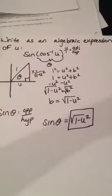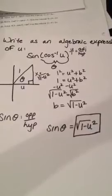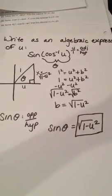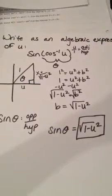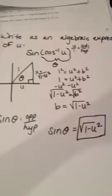Write as an algebraic expression of u: sine of cosine inverse of u. You know that cosine of theta is u over 1, so it's adjacent over hypotenuse.